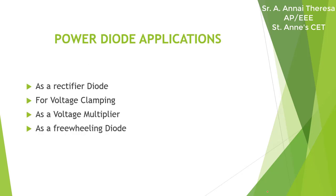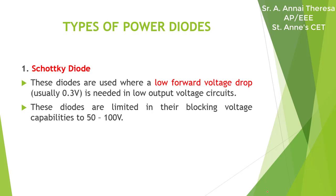Applications of power diodes include use in rectifier diodes, voltage clamping, voltage multipliers, and as freewheeling diodes. Generally, there are three types of power diodes. The first type is the Schottky diode, used where a low forward voltage drop — generally 0.3 volt — is needed in low output voltage circuits. These diodes are limited in blocking voltage capabilities from 50 to 100 volt.